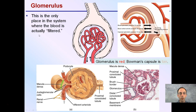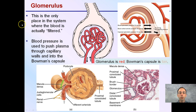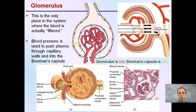Starting with the glomerulus — the only place where actual filtration occurs. Blood pressure is used to push plasma through the capillary walls into the Bowman's capsule. This is the actual point of filtration. The glomerulus is shown in red and the Bowman's capsule in tan, as we force that blood plasma across, causing physical filtration to occur.